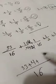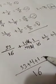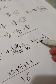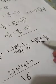1/16 stays the same, so plus 1. For 1/2, multiply by 8 to make the denominator 16.